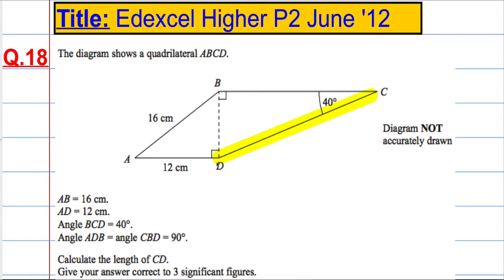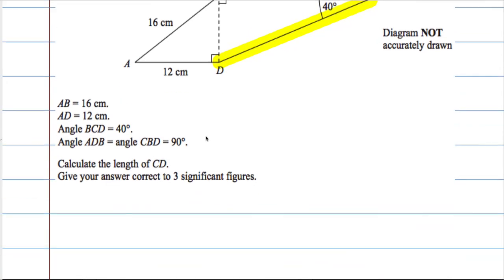If we look at the angle ABD, we can see that it's a right angle triangle, and I've got two sides, so I should be able to calculate this side here, BD, by using Pythagoras.